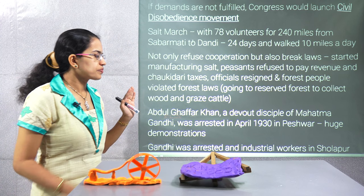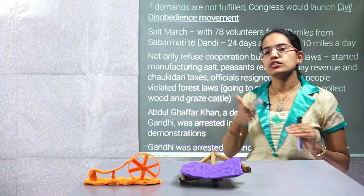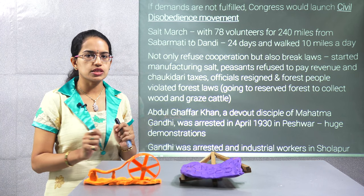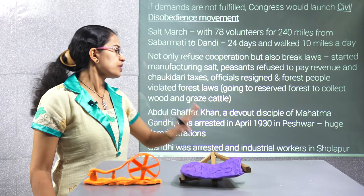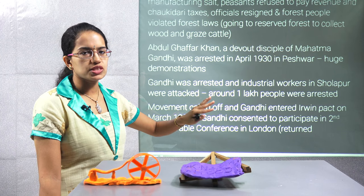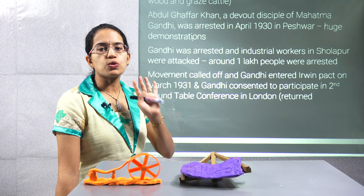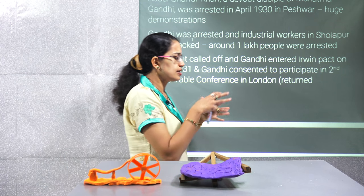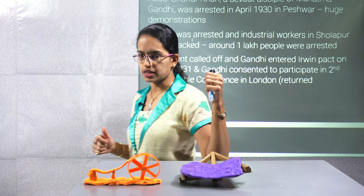There was a refusal to pay salt taxes, which the government did not accept. There were huge protests across India. Abdul Gaffar Khan, a disciple of Gandhiji, was arrested in Peshawar. Gandhiji was also arrested, and many industrial workers in Sholapur were attacked. Overall, around one lakh people were arrested during the Salt Satyagraha. Considering the Gandhi-Irwin Pact that was being proposed, Gandhiji called off the Salt Satyagraha.